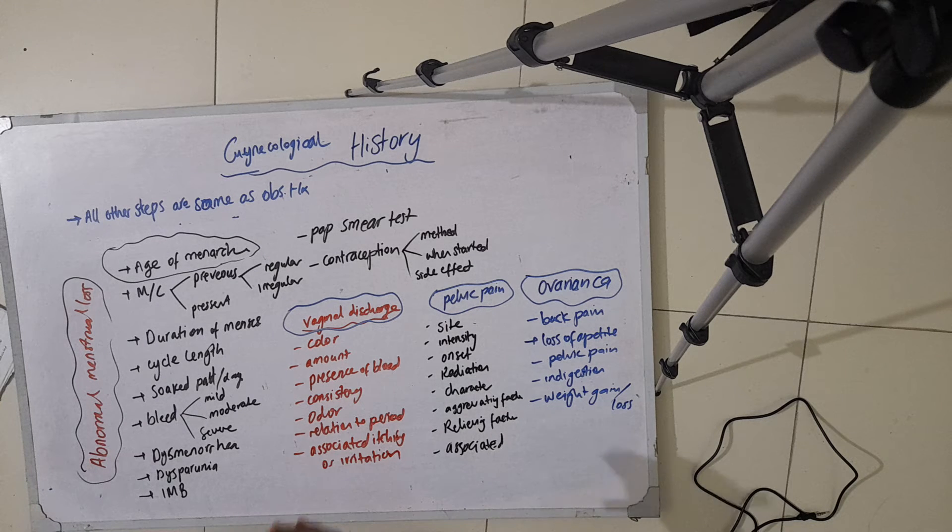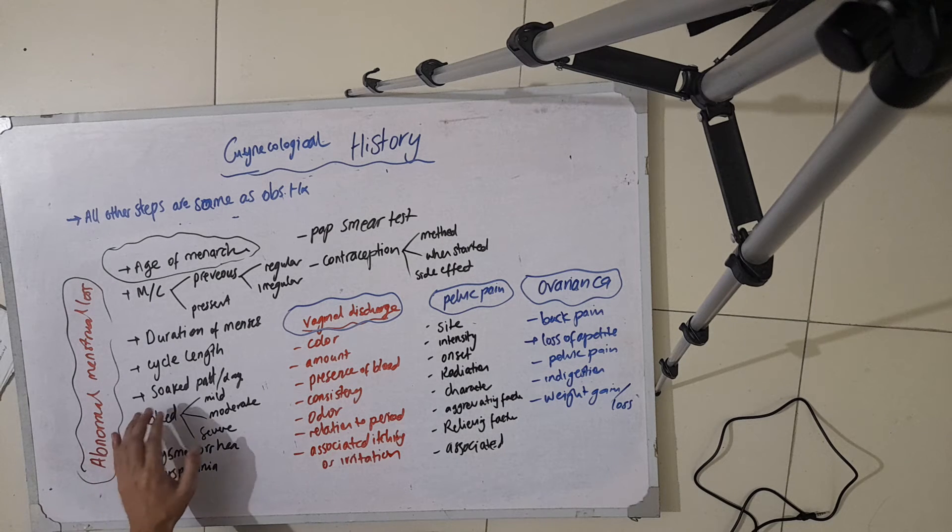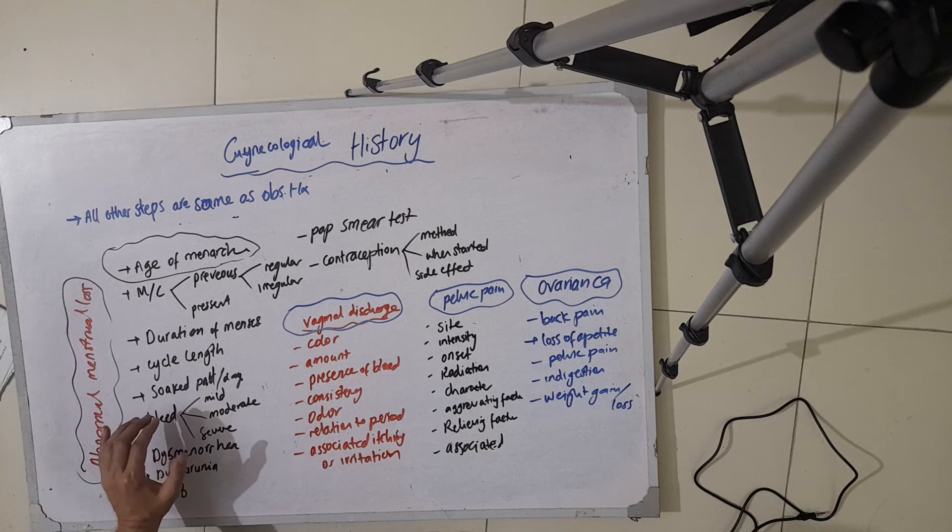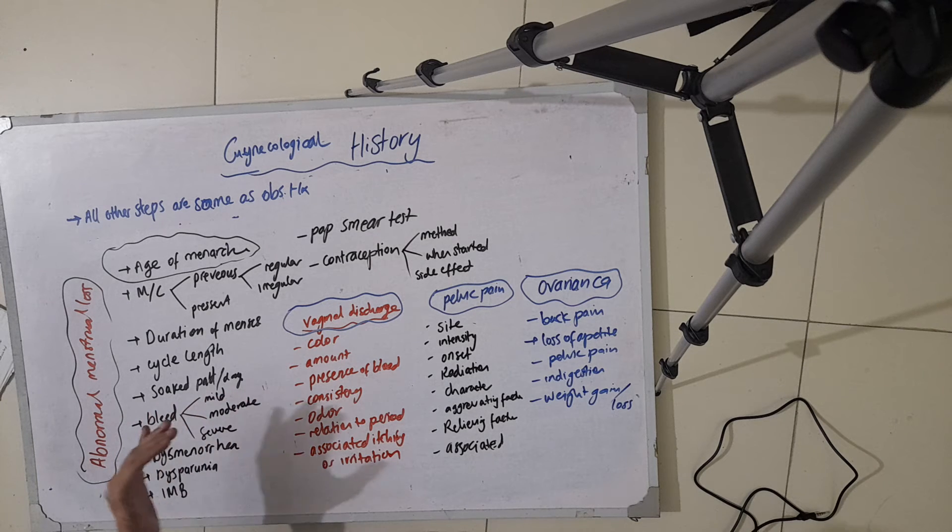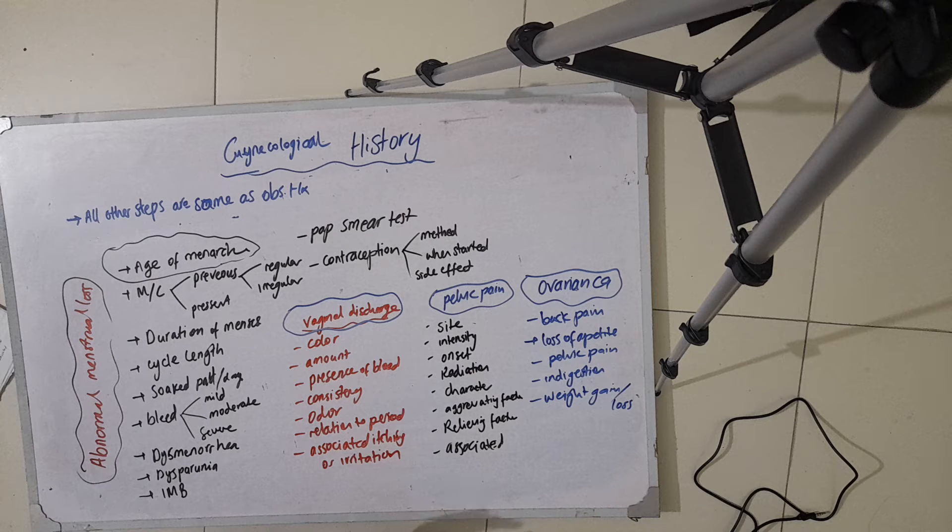For example, the period is started after 28 days, 29 days, or 30 days. You also ask about the sanitary pads per day, how many pads they are using per day.